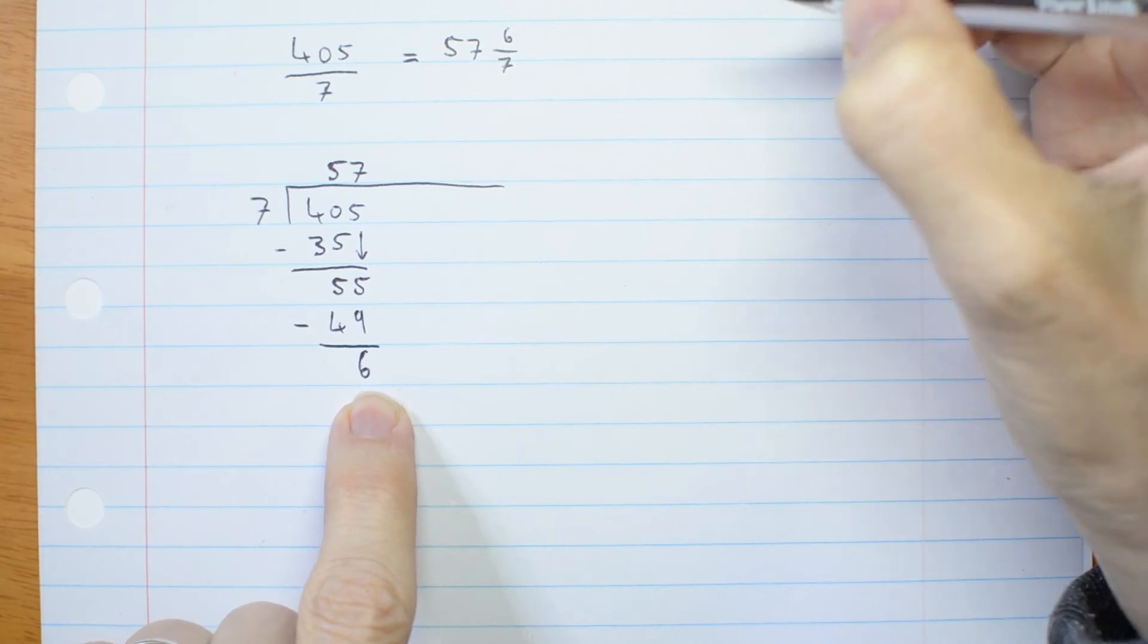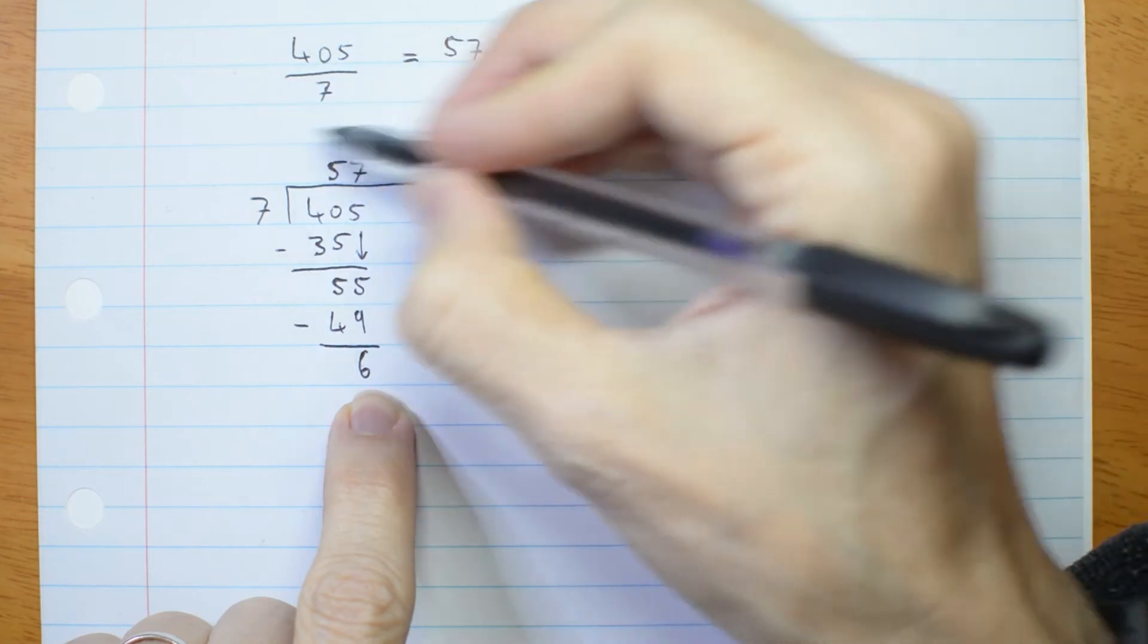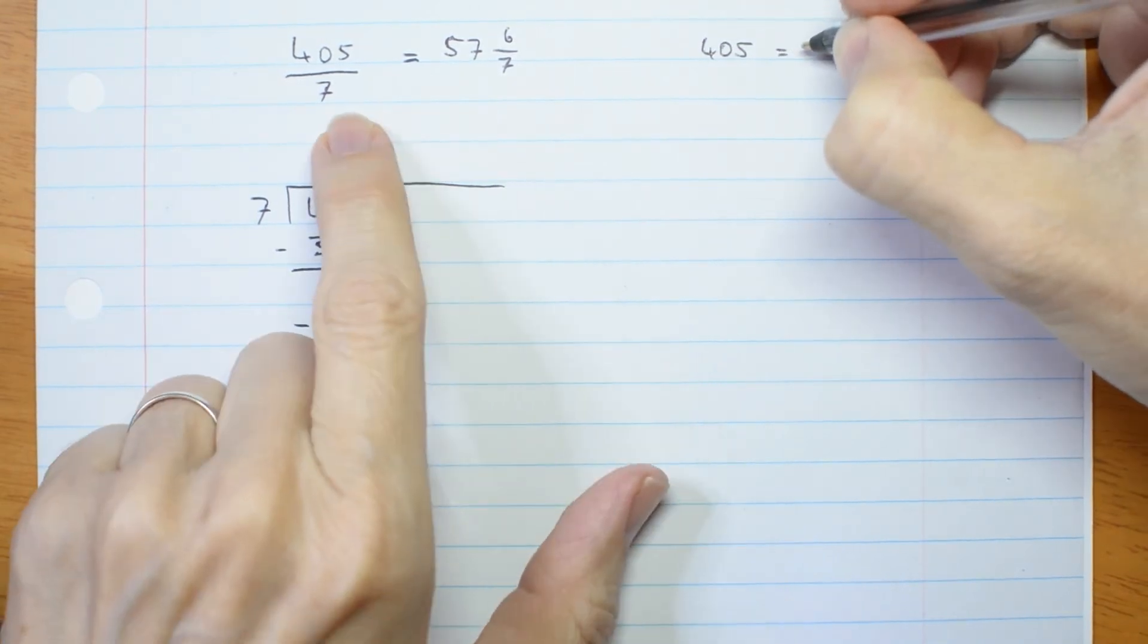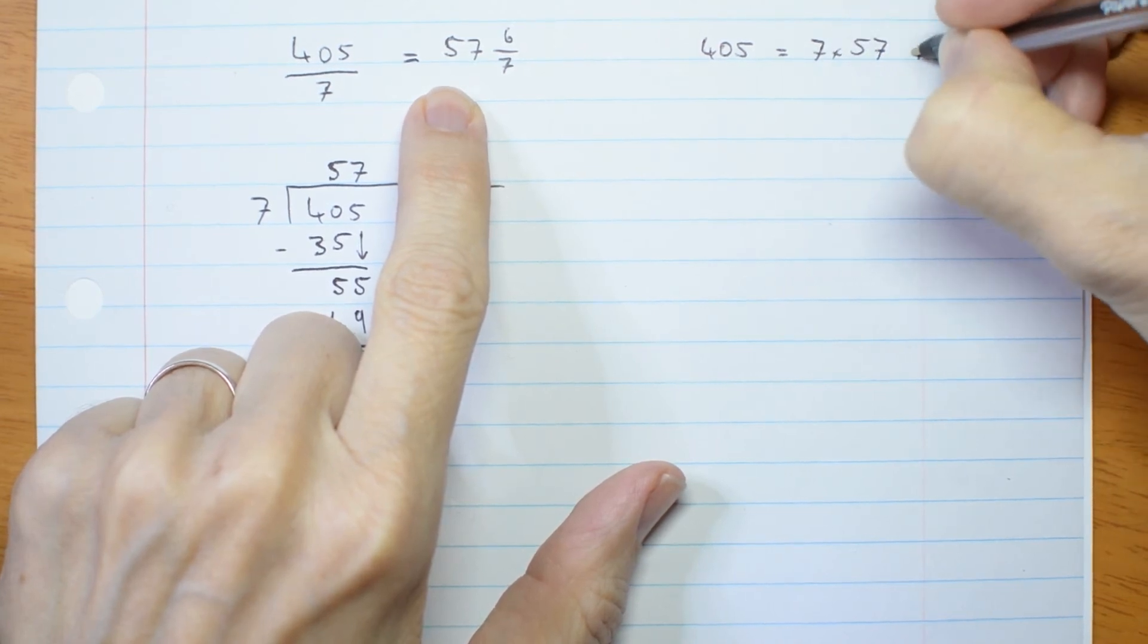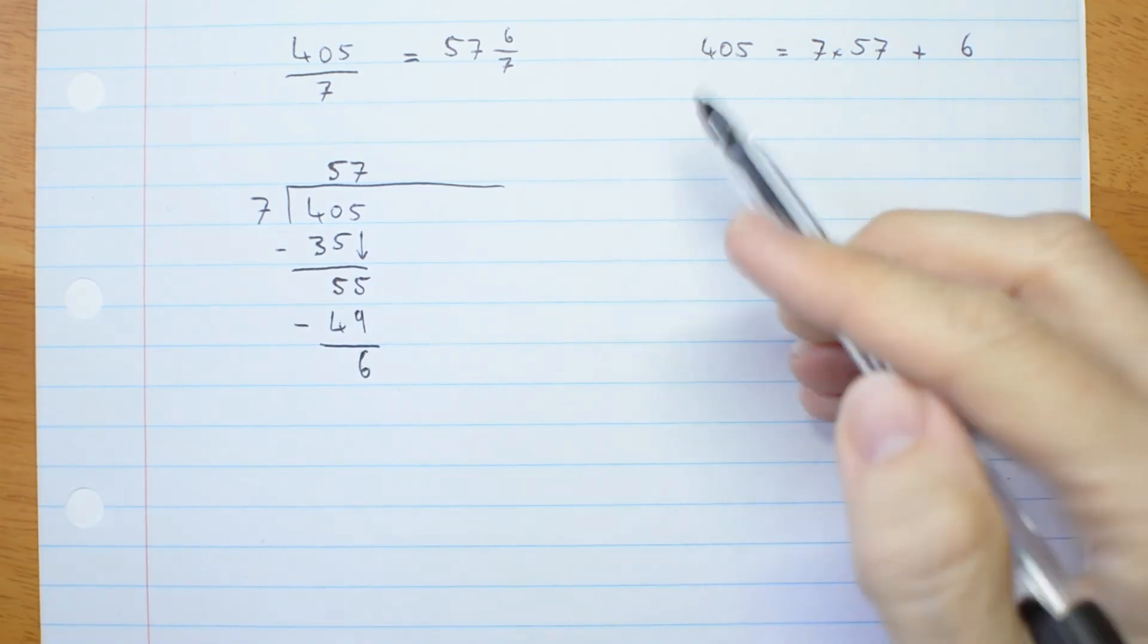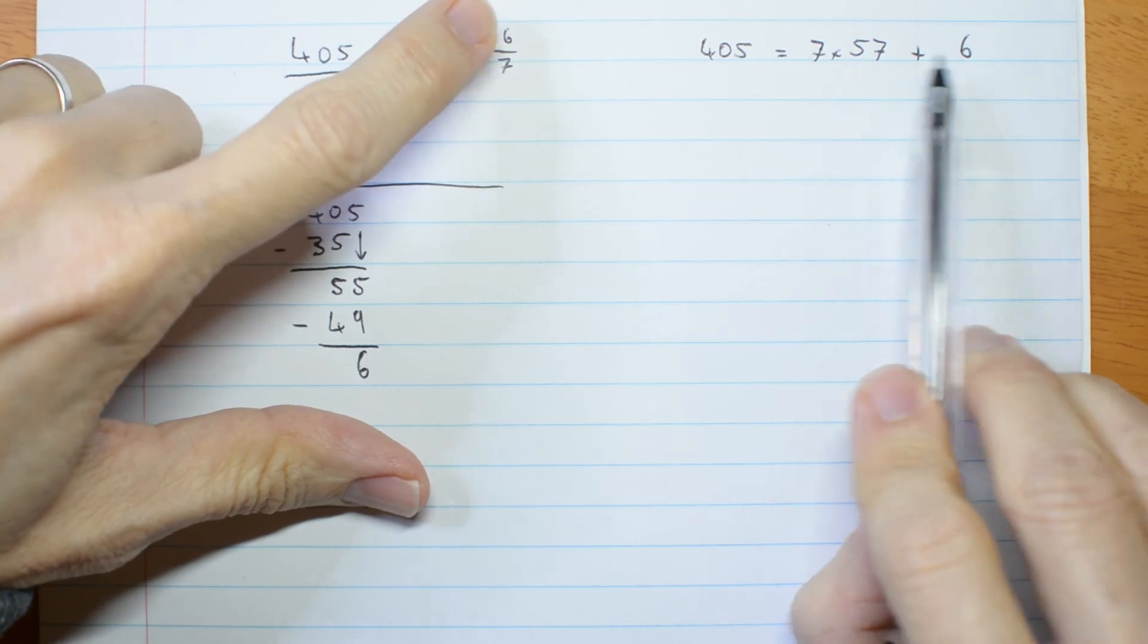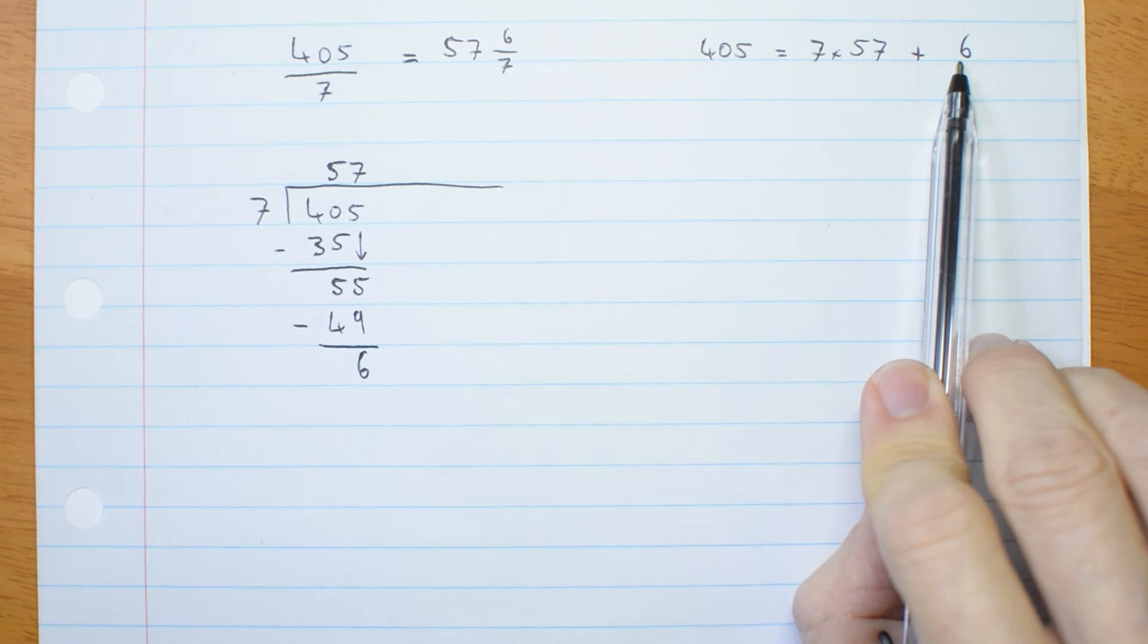There's another way I can write this. I can write exactly the same thing slightly differently by multiplying everything by 7. I can write 405 equals 7 times 57 plus a remainder of 6. So that is my dividend, divisor, quotient, remainder. And we're going to do the same thing with polynomials.